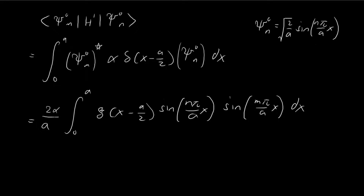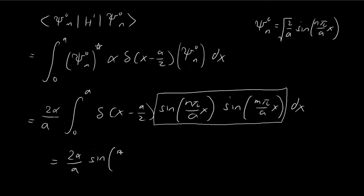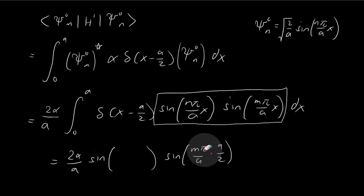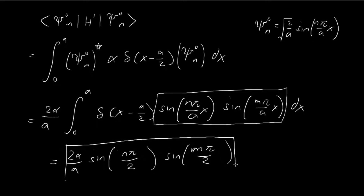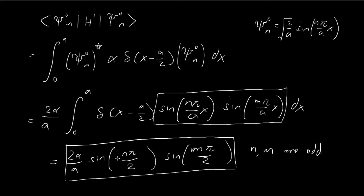Evaluating this integral: because of the Dirac delta function, everything is zero when x is not equal to a over 2, and when x equals a over 2 the delta function picks out the value there. So we're left with the expression evaluated at x equals a over 2 — that is sine(n pi over 2) times sine(m pi over 2). For this expression, if either n or m is an even integer, we get 0. So for this term to be nonzero, both n and m must be odd numbers. When both are odd, the sine terms both equal 1, and the entire expression is just 2 alpha over a.